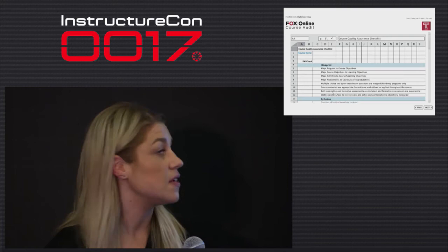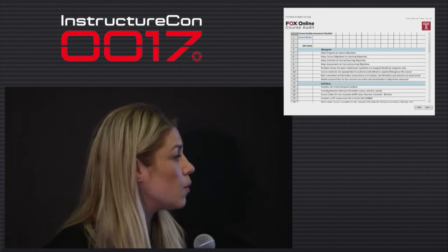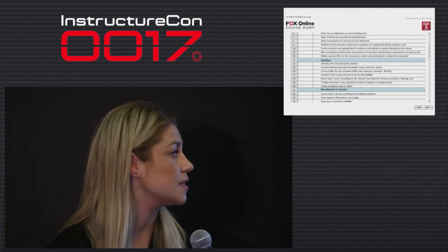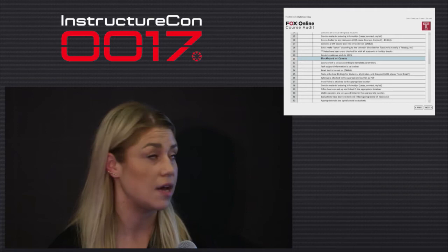Once we have gone through building the course in the learning management system, we do an intensive audit process. We have developed this for Blackboard and we're working to adjust it for Canvas as we learn Canvas. It's a really detailed Excel document where we go over ensuring that all of the content was covered in the blueprint, in the syllabus, and in the Blackboard or Canvas site. We check all links and everything that has been included in the site to ensure that everything's working appropriately and the students are navigated through the course in an easy format.